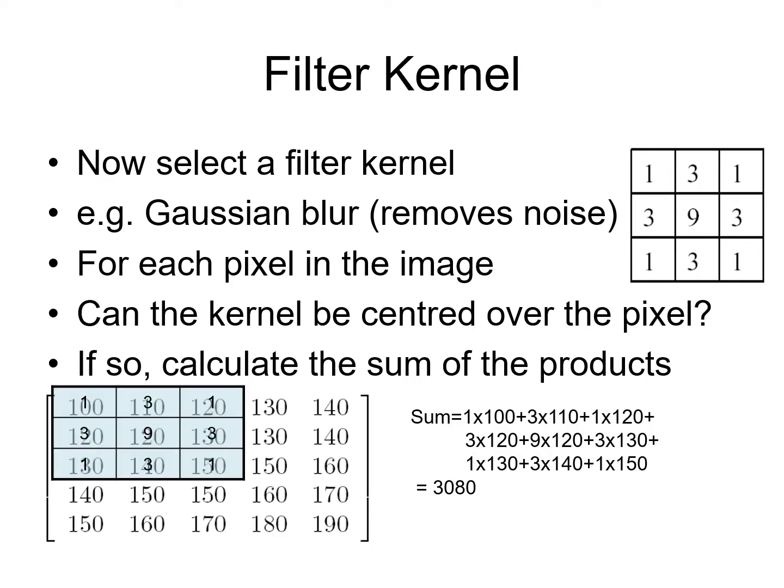We start by working out the top left pixel over which the filter can be centered without the filter going outside the image. For a 3 by 3 filter, this will be the pixel in the second row and second column. We will start a loop that traverses all the pixels in the image, apart from those at the border that the filter cannot be centered on.